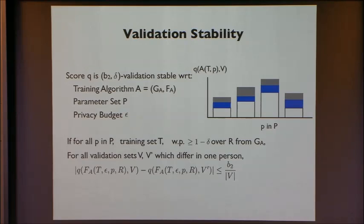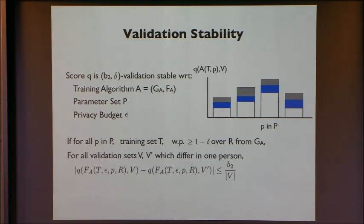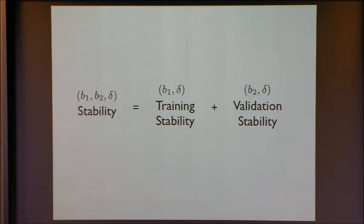The next thing is validation stability, which is actually much more standard. This says that if you keep the training part the same — so the output of the training procedures are the same — but change one person's value in the validation set, then the validation score does not change too much. We say the entire procedure has B1, B2, delta stability if it has B1-delta training stability and B2-delta validation stability.